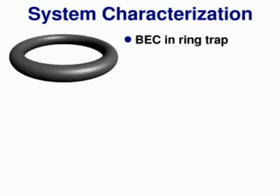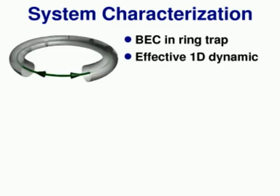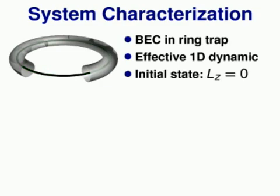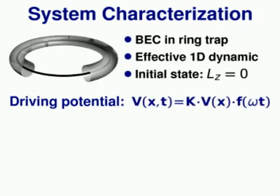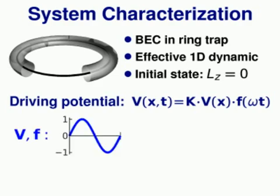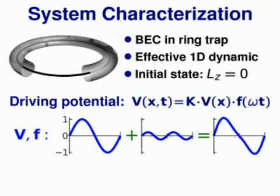We propose the following specific setup for the realization of an orbital Josephson effect: a Bose-Einstein condensate trapped in a ring geometry whose motion is effectively constrained along the radial degree of freedom, as indicated by the arrows in the sketch. We consider the condensate to be initially in the zero angular momentum mode. Along the effective degree of freedom a driving potential is applied. In our specific example we take a potential which can be written as a product of a purely spatial and a purely time-like part, both of which can be decomposed in the first and the second harmonic.